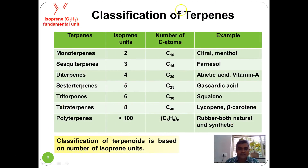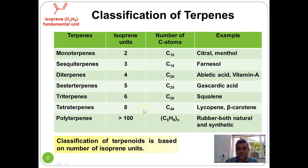Now let us see the classification of terpenoids. Terpenes are classified based on the number of isoprene units they contain. Monoterpenes contain 2 isoprene units (C10), diterpenes contain 4 (C20), triterpenes contain 6 (C30), and tetraterpenes contain 8 (C40). When they contain an odd number of isoprene units, they are called sesqui- or sesterterpenes: sesquiterpenes have 3 isoprene units (C15) and sesterterpenes have 5 (C25).